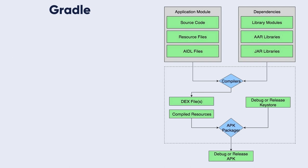In a typical Android app build, the first step is that compilers convert your source code into DEX (Dalvik Executable) files, which contain the bytecode that runs on Android devices, and everything else into compiled resources. Then the packager combines the DEX files and the compiled resources into an APK or AAB depending on the chosen build target.